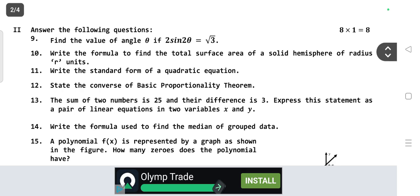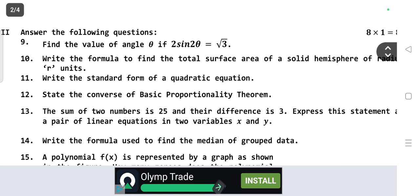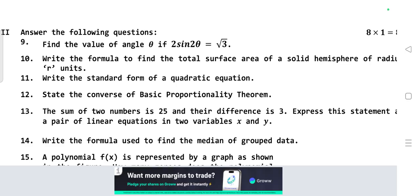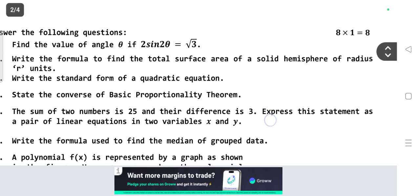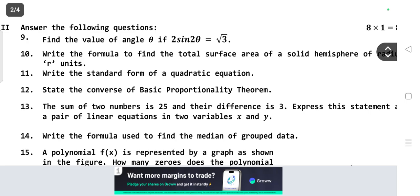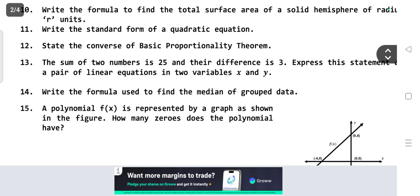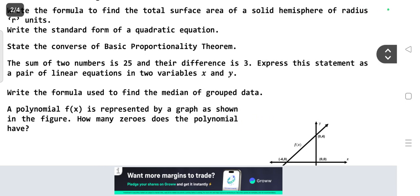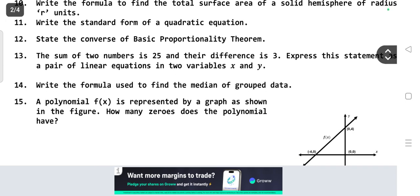Next, one-word answer questions, eight questions. First: Find the value of angle theta if 2 sin theta equals root 3. Write the formula to find the total surface area of a solid hemisphere of radius r units. Write the standard form of a quadratic equation. State the converse of basic proportionality theorem. The sum of two numbers is 25 and their difference is 3, express this statement as a pair of linear equations in two variables x and y.